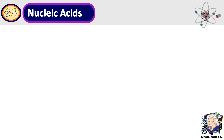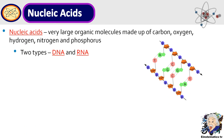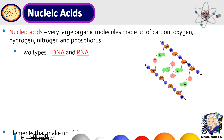Now let's proceed to the last type of macromolecule, known as nucleic acids. Nucleic acids are very large organic molecules made up of carbon, oxygen, hydrogen, nitrogen, and phosphorus. There are two kinds: DNA and RNA.